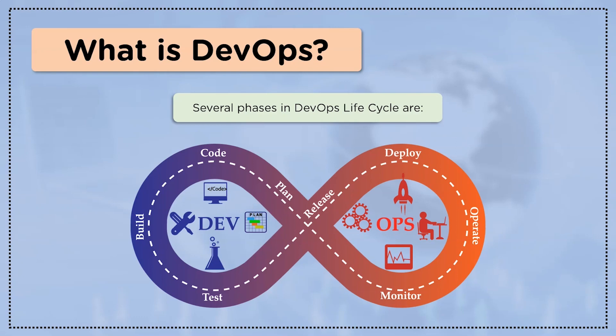Then comes the build phase, where tools like Gradle and Maven are used to automatically fetch the source code from the repositories and package them into executable applications. After the build phase comes the test phase. Testing in DevOps is automated within the build pipeline to ensure that the applications are deployable, and the most common tool in this phase is Selenium.